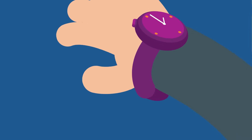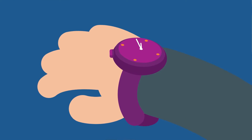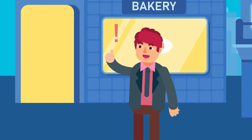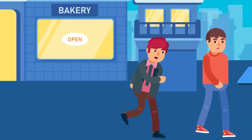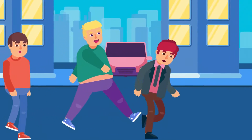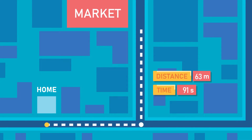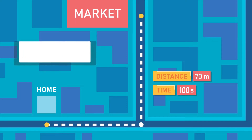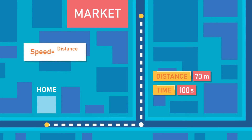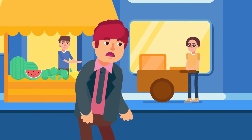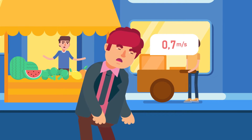If it took us 100 seconds to reach the market, we can also calculate our speed. Speed can be defined as the rate at which something moves, and can be calculated by measuring distance traveled in a particular time period. The equation is: speed equals distance over time, which gives us 0.7 meters per second. Since it's a scalar quantity, speed only contains magnitude.